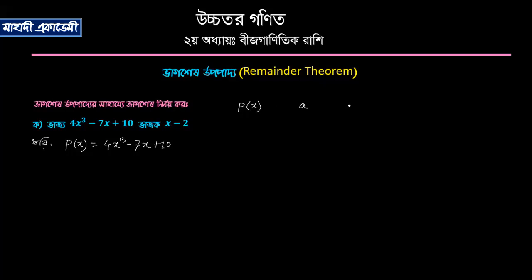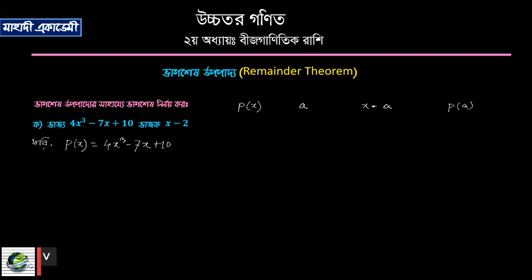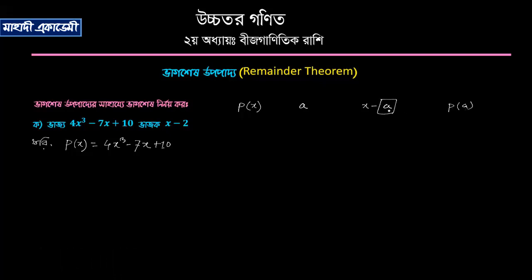So p of x divided by x minus a gives the remainder p of a. We know that p of x is the problem, and that is the problem, so p of x — we'll find the problem — that p of a would not be a problem.